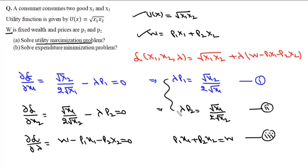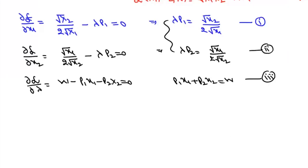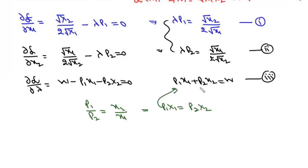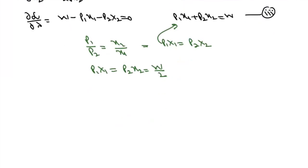Dividing the first equation by the second, we get p1/p2 = x2/x1, or equivalently p1·x1 = p2·x2. Substituting into the budget constraint gives p1·x1 = p2·x2 = w/2.